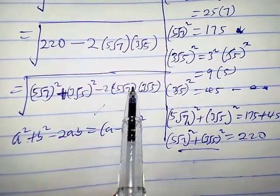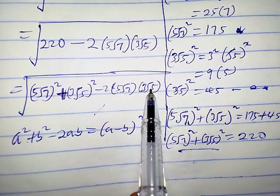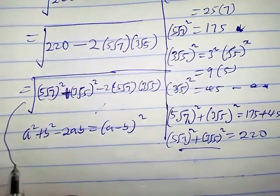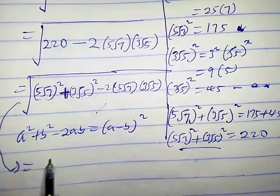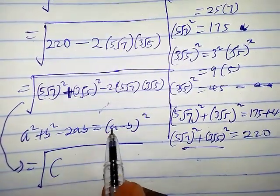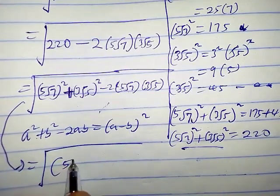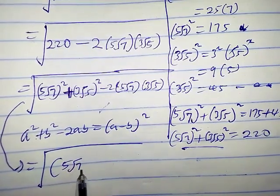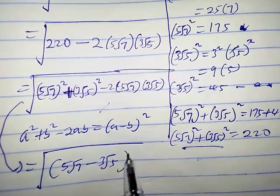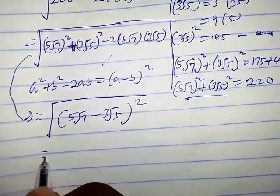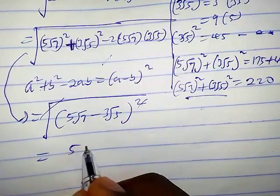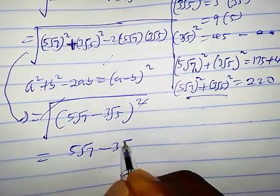So a equals 5√7 and b equals 3√5. Applying the identity, the expression becomes square root of (5√7 minus 3√5)², which simplifies to 5√7 minus 3√5.